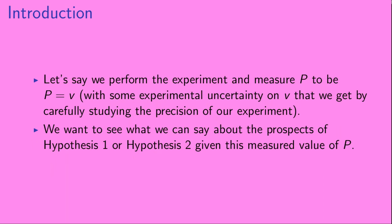Let's say we perform the experiment and measure the parameter P to have some value v, where we have some experimental uncertainty on v that we evaluate by carefully studying the precision of our experiment. We want to see what we can say about the prospects of hypothesis one and hypothesis two given this measured value of P.